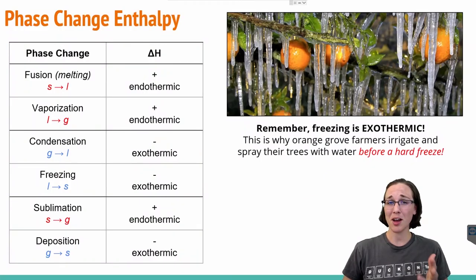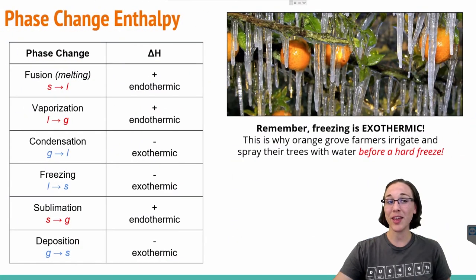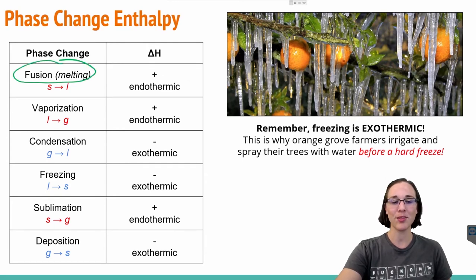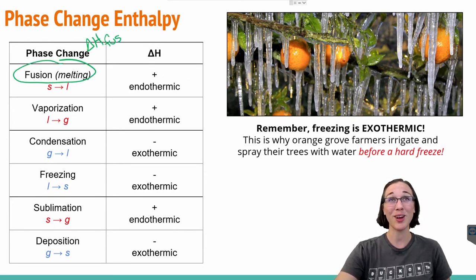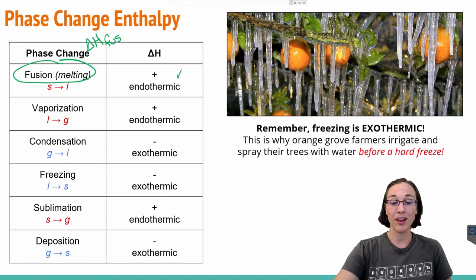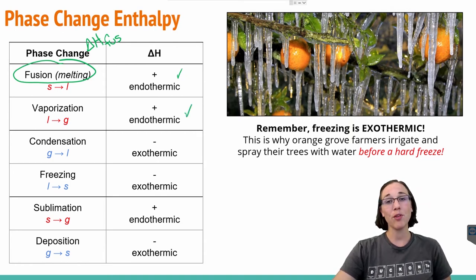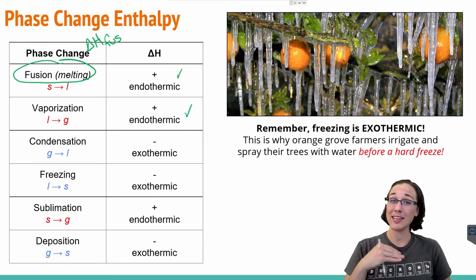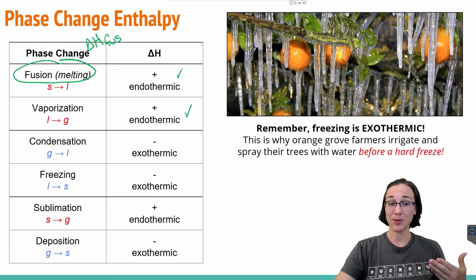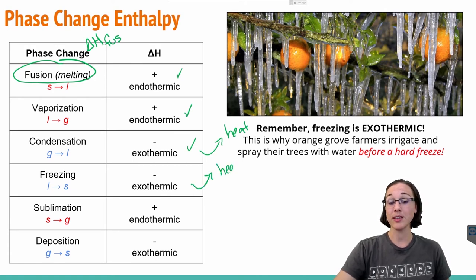I've created a table to help summarize this. If you undergo the phase change of fusion or melting — going from solid to liquid, or left to right on the heating curve — that has an enthalpy value of endothermic; it requires heat. Vaporization, going from liquid to gas, is also endothermic. However, going from right to left: condensing gas to liquid is an exothermic process that releases heat. Likewise, freezing — going from liquid to solid — is also exothermic because it releases heat.